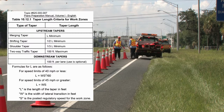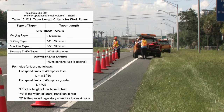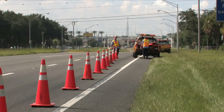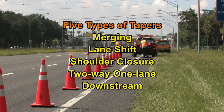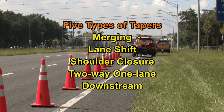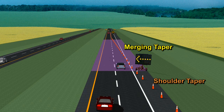The taper length criteria for work zones can be found in Chapter 10 of the Plan's Preparation Manual. The spacing of devices can be found in the Design Standards Index 600 series. There are five general types of tapers used in traffic control zones. It is important that you know what type of taper you will need and how to determine its length. Merging tapers close a lane of moving traffic on multi-lane highways where a merge is required. The length of the merging taper is determined by the speed of the traffic and the width of the lane to be closed.